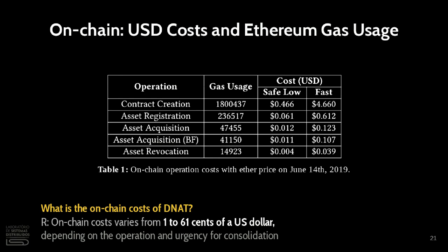When we think about on-chain computations, we think about the financial viability of the operations and the urgency for operation consolidation. For example, in Table 1, we have the costs in dollars of the DNAT on-chain operations. The table also demonstrates the prices for low and fast operation consolidation.